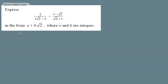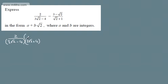So let's start with this fraction here. We've got 2 over 3 root 2 minus 4. I'm going to rationalise the denominator by multiplying by 3 root 2 plus 4. This is going to give me the difference of squares.